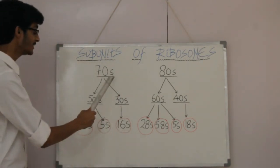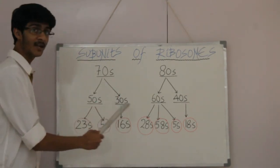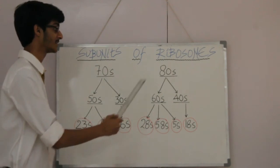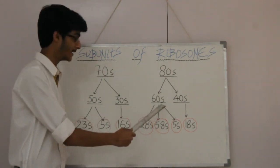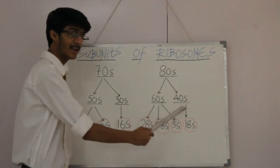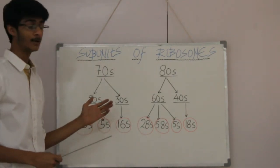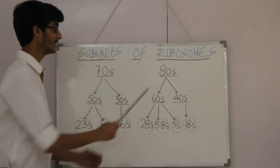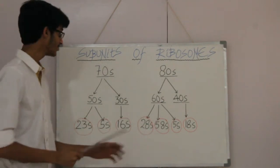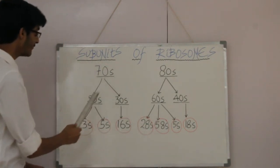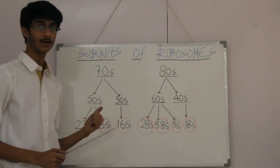The 70S is comprised of two subunits, 50S and 30S, and the 80S is made up of two subunits as well, 60S and 40S. We can memorize this very easily by looking at the fact that 8, 6 and 4 are all even numbers, and 7, 5 and 3 are all odd numbers.